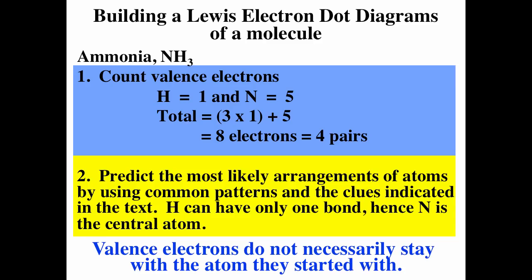The four steps: Step one is counting the number of valence electrons. For ammonia, NH3, hydrogen is in the first column so it has one valence electron — three times one gives us three. Nitrogen is in the fifth column, so three plus five gives us eight valence electrons total. It doesn't matter where the valence electrons started. You count them, remove them from the atoms, and when you draw the Lewis diagram you redistribute them trying to make the most stable structure.